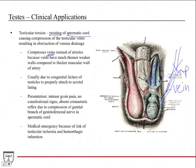That's why testicular torsion is a medical emergency. These patients present with really intense groin pain and no constitutional symptoms like fevers or chills. They will have an absent cremasteric reflex, because the genital branch of the genitofemoral nerve travels in the spermatic cord and gets compressed by the twisting action. Importantly, cryptorchidism puts patients at risk for torsion because a freely floating testicle that isn't properly descended can more easily twist.